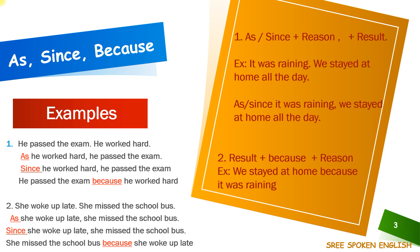Let us try one more example. She woke up late. She missed the school bus. What is the reason? She woke up late — that is the reason. What is the result? She missed the school bus — that is the result. With as: as she woke up late, she missed the school bus. With since: since she woke up late, she missed the school bus. With because: she missed the school bus because she woke up late.